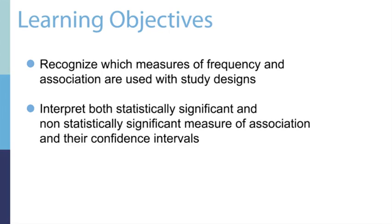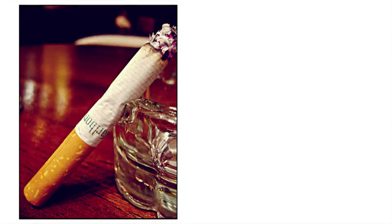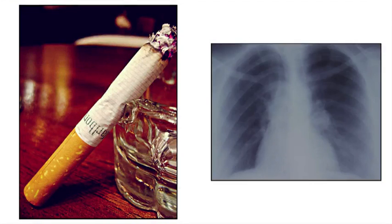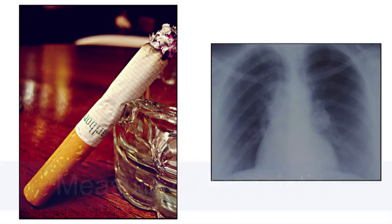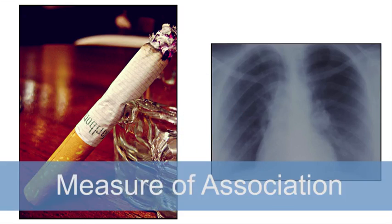Let's start with a few examples of measures of association. These examples may be similar to ones you might have heard of in the news. Epidemiologic research on smoking and lung cancer has found that people who smoke are 15 to 30 times as likely to get lung cancer or die from lung cancer than people who do not smoke. This is an example of a measure of association.